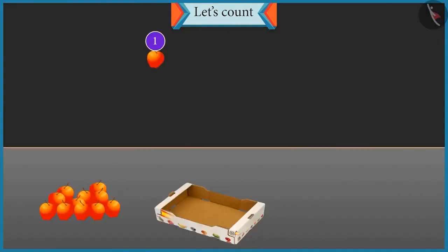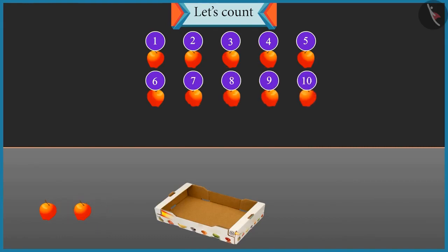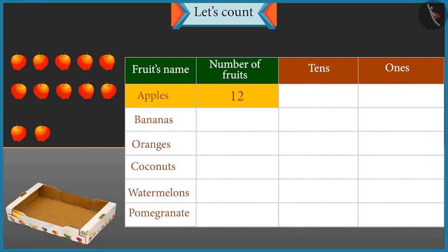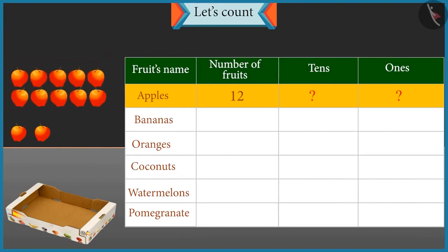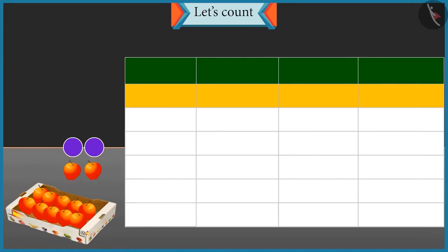One, two, three, four, five, six, seven, eight, nine, ten, eleven and twelve. There are twelve apples. Well done. Apples: twelve. Now tell me how many tens and ones are there in twelve? One group of ten will be formed and two apples will be left. So there is one ten and two ones. Well done.